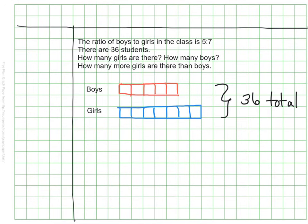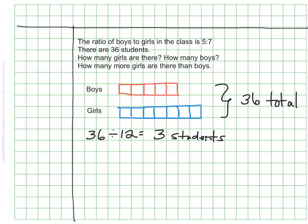The first thing I want to do is figure out how many squares or rectangles there are in total. With five boys and seven girls, I know that's a total of 12 squares or rectangles. But I know that I have 36 students, so I need to take my 36 and divide it by 12 to figure out how much is represented by each square. So 36 divided by 12 means there are three students for every one of these boxes or rectangles.